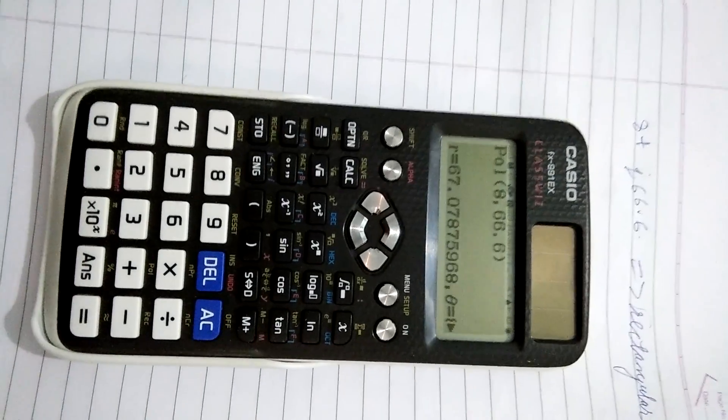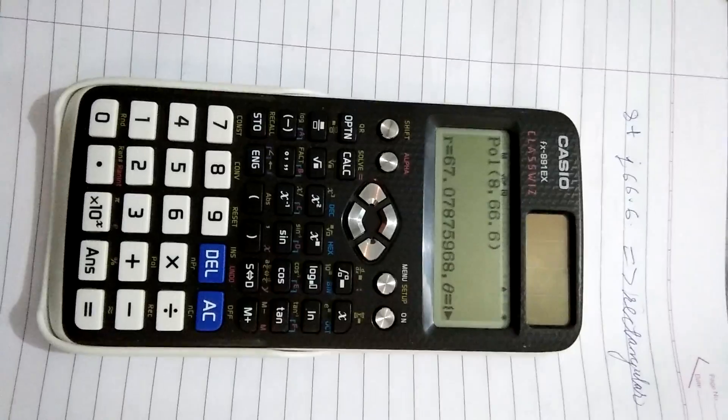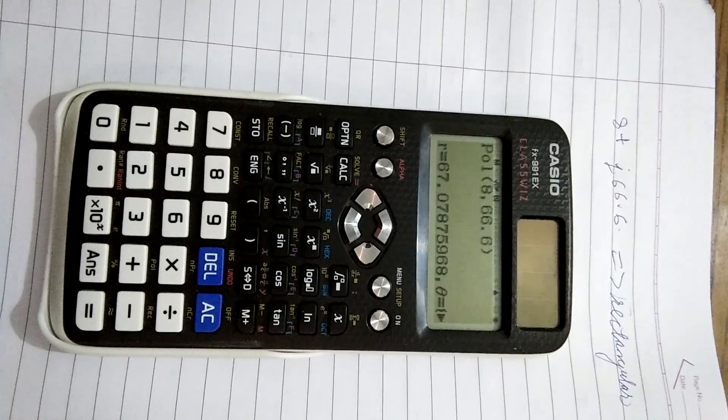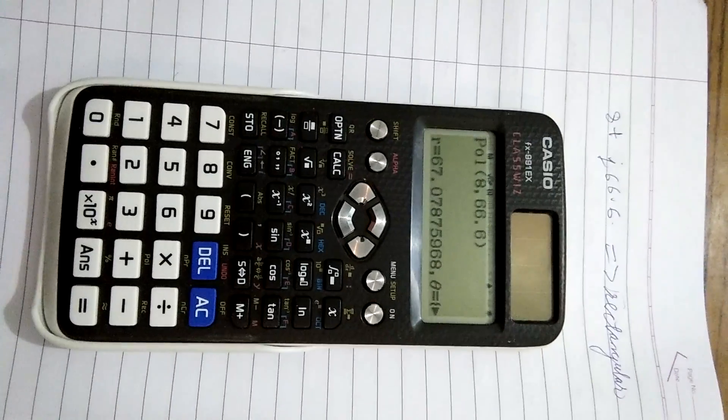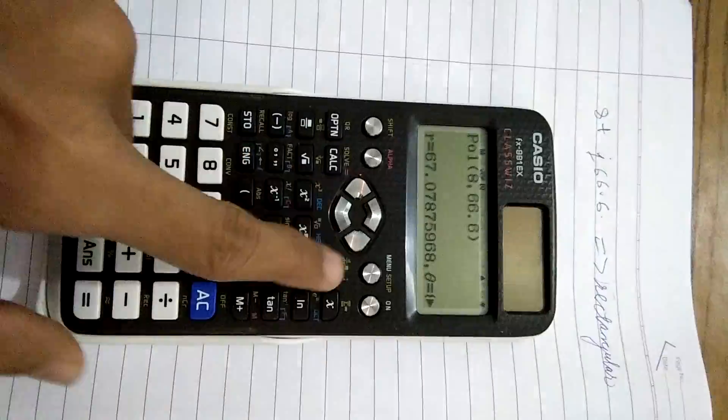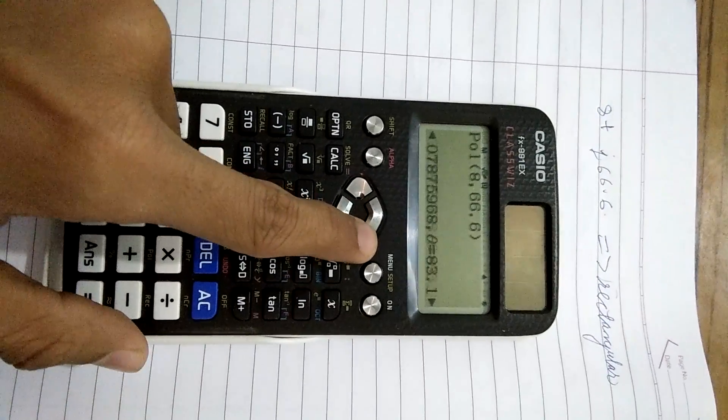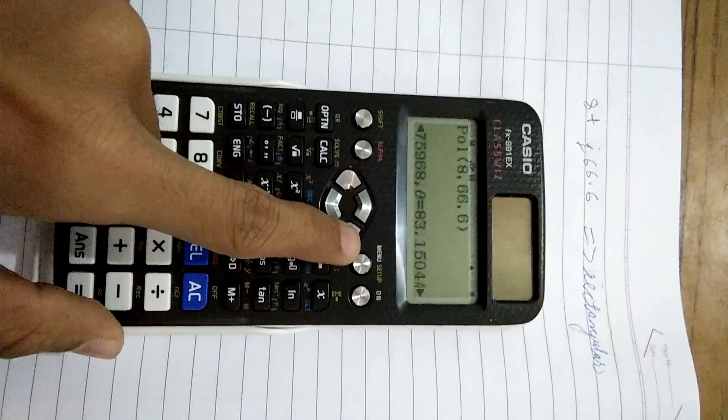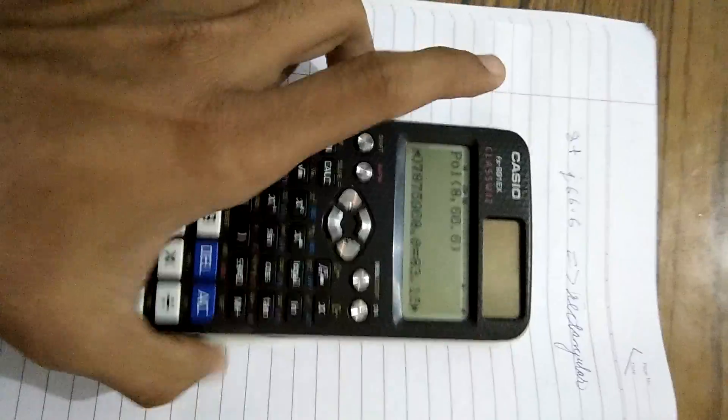Press equal to and your answer gets displayed. R is equal to 67.07 and theta is equal to 83.15. So your polar form will be in the form of R angle theta.